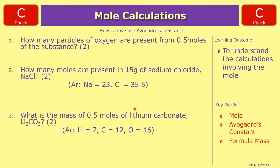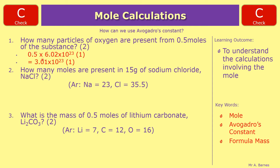Question 1: how many particles of oxygen are present from 0.5 moles? Remember Avogadro's number: 6.02 × 10²³. Multiply that by your number of moles: 0.5 times 6.02 × 10²³. Writing 6.02 × 10²³ earns one mark; multiplying them together to get the correct answer of 3.01 × 10²³ earns your second mark.